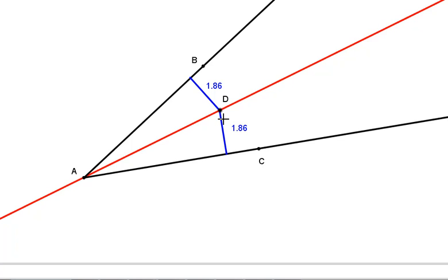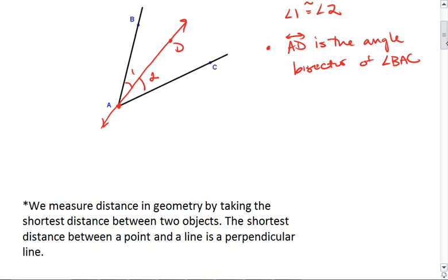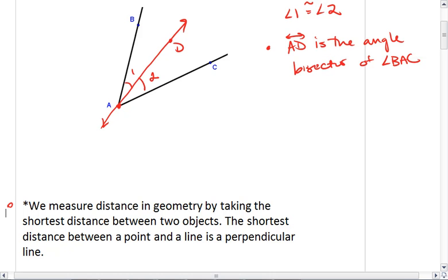Now, there's something important to note here, and that's how we measure distance in geometry. We measure distance in geometry by taking the shortest distance between two points. And the shortest distance between a point and a line is a perpendicular line.